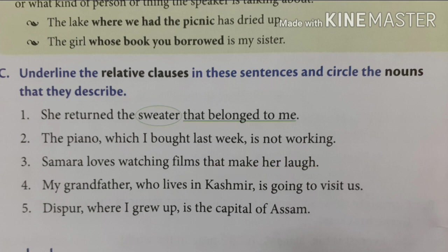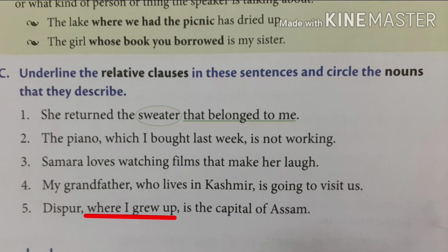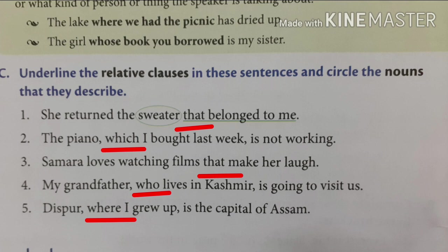Next sentence: 'My grandfather who lives in Kashmir is going to visit us.' The relative clause is 'who lives in Kashmir.' Next: 'This pool where I grew up is the capital of Asa.' The relative clause is 'where I grew up.' In all these sentences, the relative clauses start with a relative pronoun like which, what, who, where, etc. These are called relative clauses.